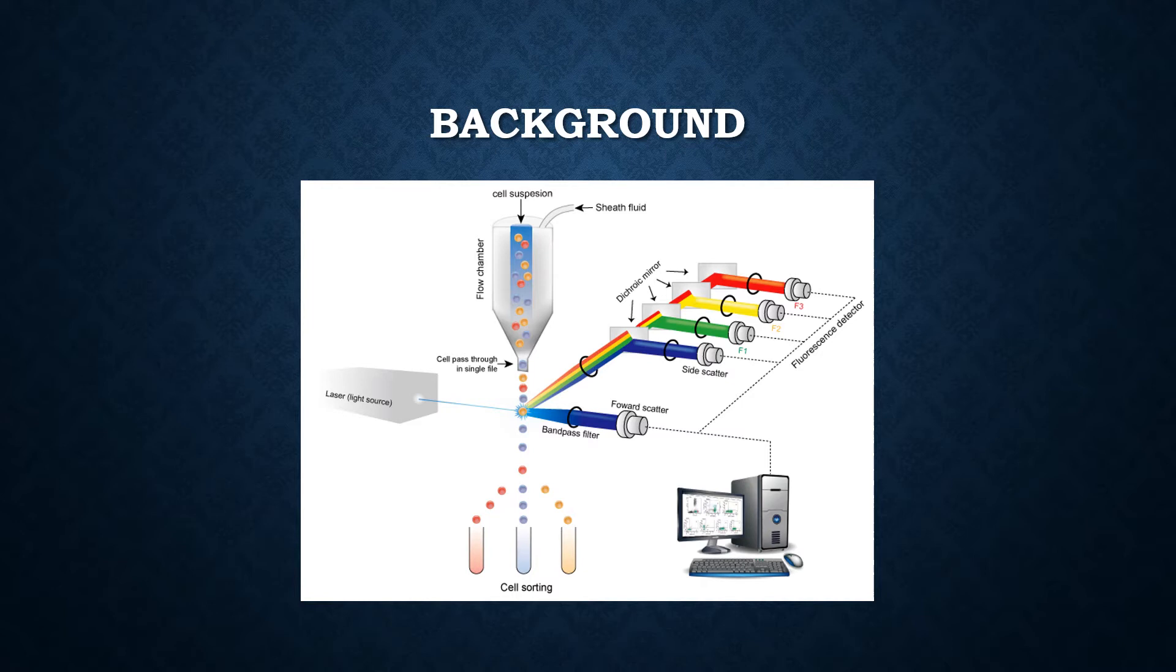It detects the laser scatter called the forward laser scatter and analyzes the amount of the forward scattered laser for each cell. The data then transfers to the computer and analyzes the shape by how much the laser passes through.